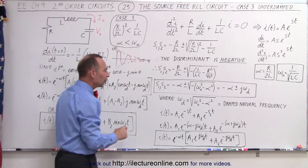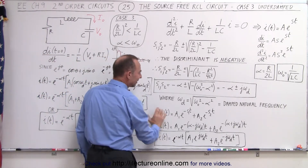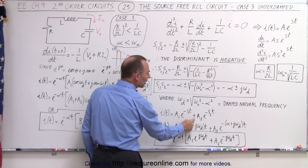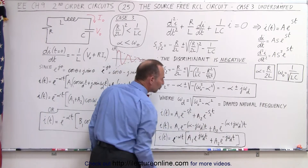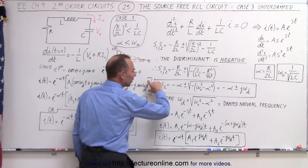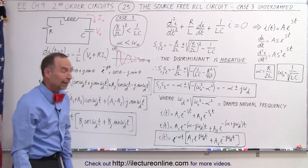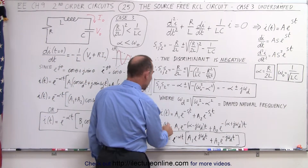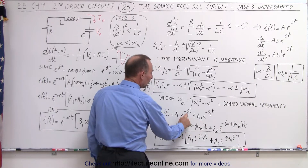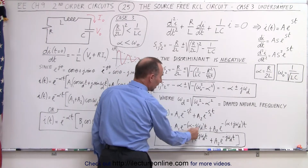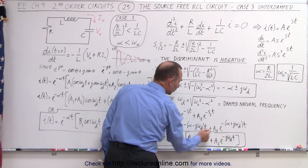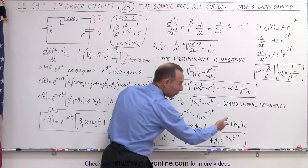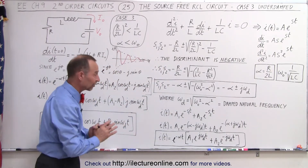Now we can write the solution for the current in the same format as before: A1 times e to the minus S1·t plus A2 times e to the minus S2·t. S1 and S2 are the solutions to the characteristic equation. We then plug in what the exponents are: minus S1 can be written as this, and minus S2 can be written as this. We've pulled out the negative, so we have one as a negative and one as a positive.